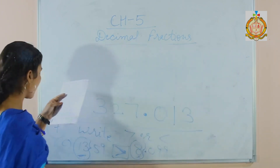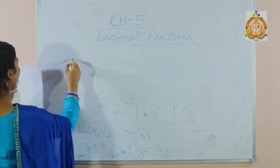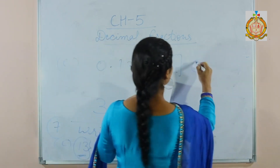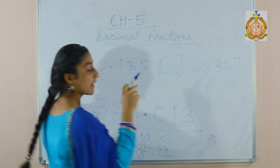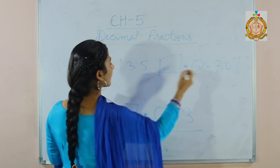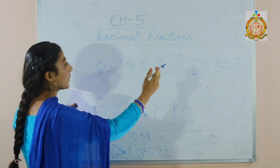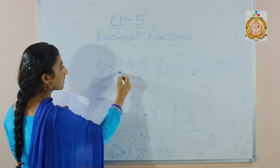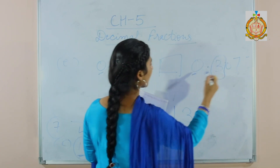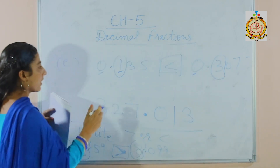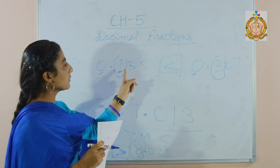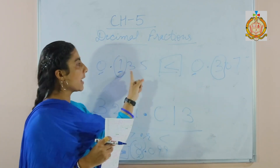Now part E: 0.135 compared to 0.307. Students, if the decimal fractions have the same whole number part — both are 0 — then we compare the decimal fractions by their 10th place digits. Here the 10th place digit is 1 and here the 10th place digit is 3, so this fraction is greater. If the 10th place digits are the same, then we compare the decimal fractions by their 100th place, and so on.